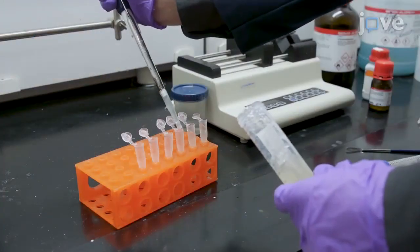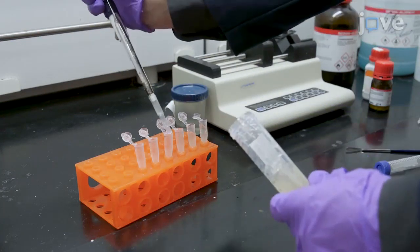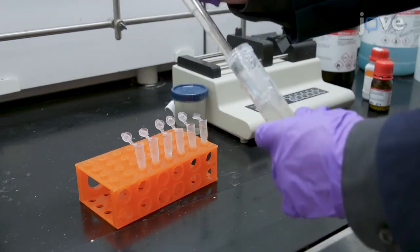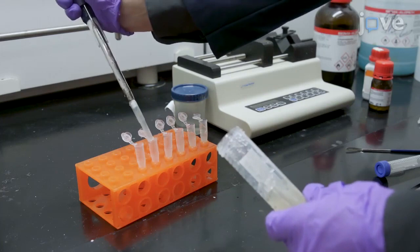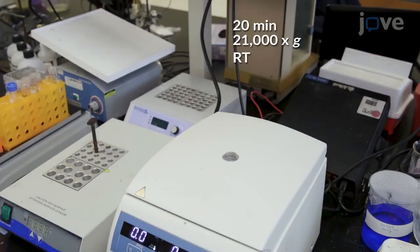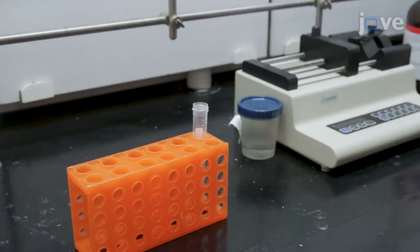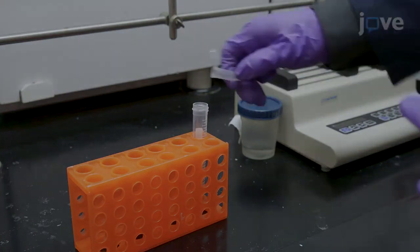Next, transfer 0.25 milliliters of the 3% cellulose nanofiber solution into each of six microfuge tubes and sediment the nanofibers by centrifugation. Use a pipette to aspirate the excess water above the compacted nanofibers while avoiding contact with the top surface.